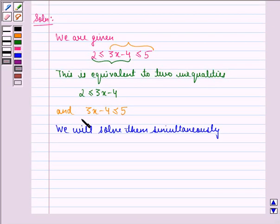We have 2 is less than or equal to 3x minus 4 is less than or equal to 5. Now we can add 4 to all three parts.